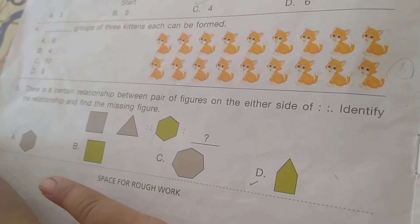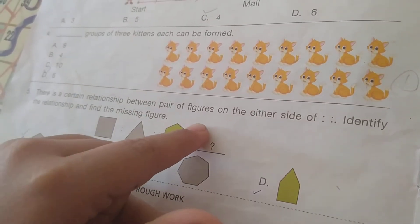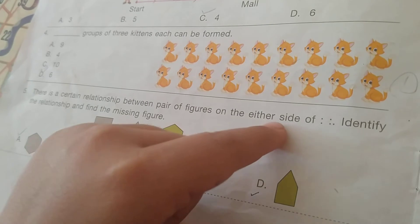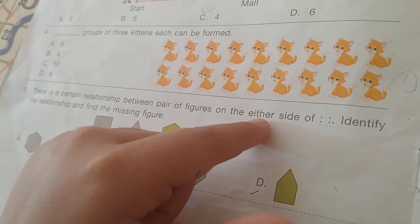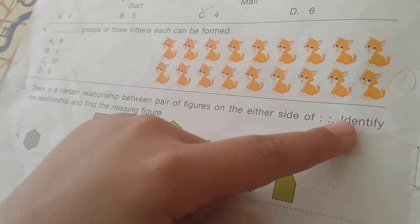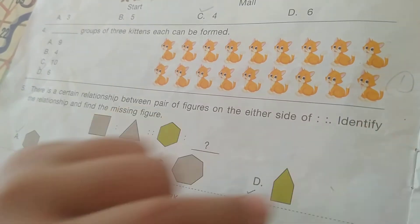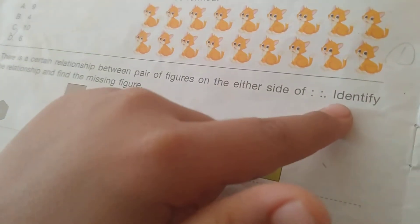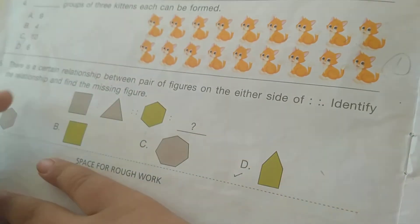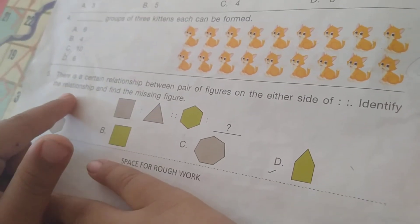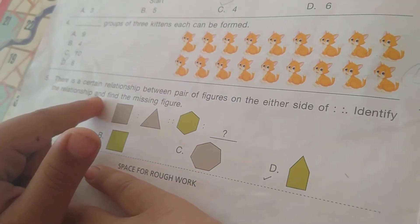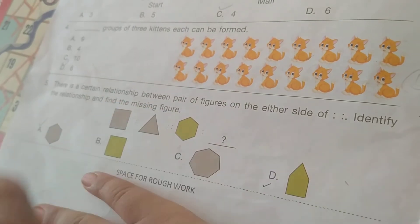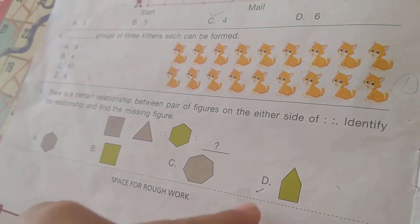There is a certain relationship between pair of figures on the other side. Identify the relationship and find the missing figure. So the answer is D.